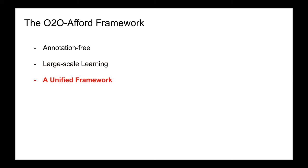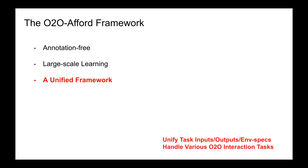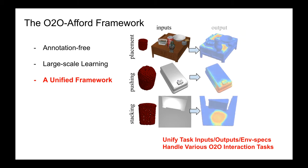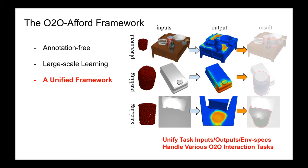Lastly, but more importantly, our system provides a unified framework to tackle a wide range of object-to-object interaction tasks. We unify the task inputs, outputs, and environment specifications. For example, all the tasks shown here take two point clouds as inputs and learn to predict an affordance map over the scene point cloud, which indicates the actionable locations for the acting object.